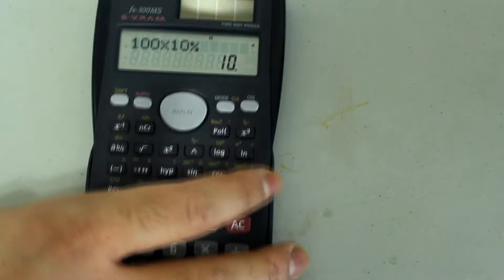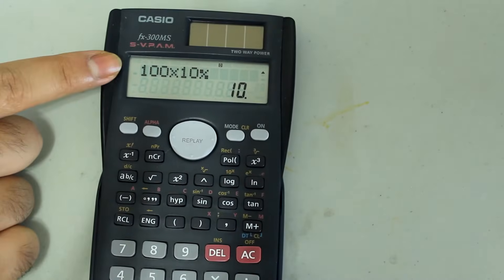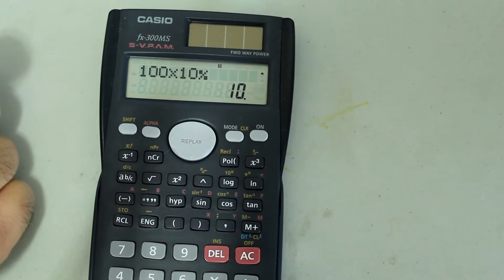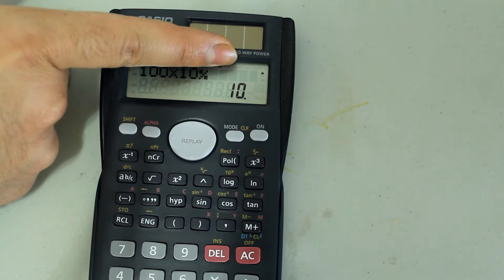And once I do that, I get the answer. So 100 times 10%, which gives me 10% of 100, is 10.